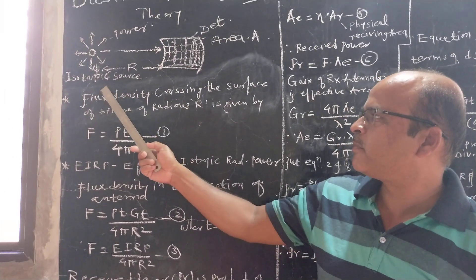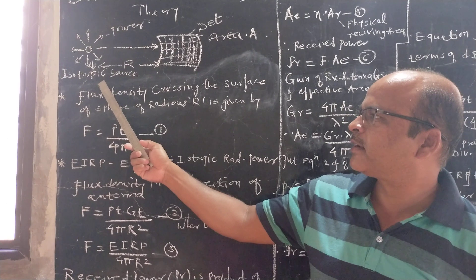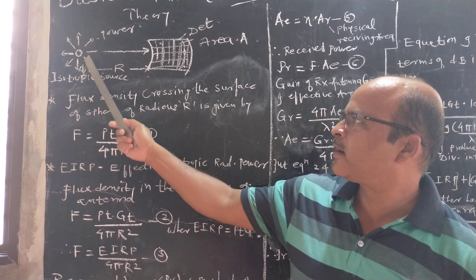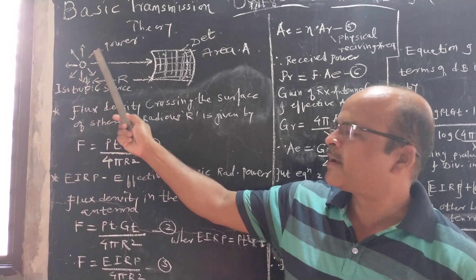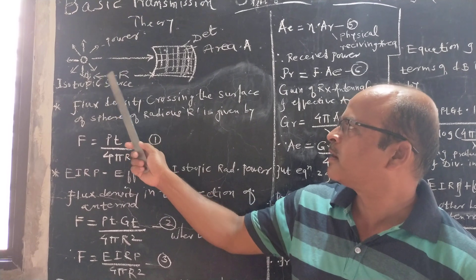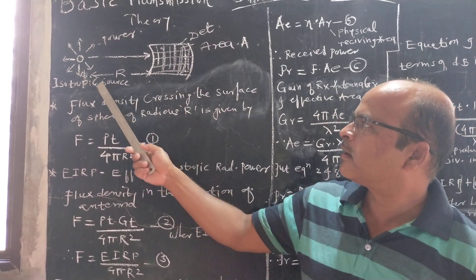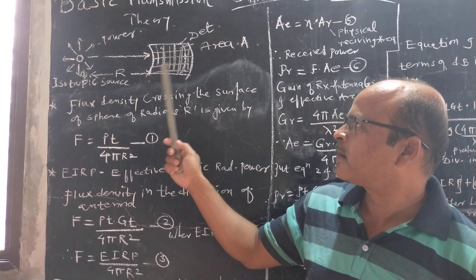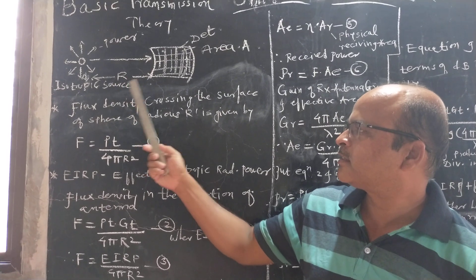First, we have to mention an isotropic source. We have to consider an antenna which is isotropic. Isotropic means an antenna which radiates equally in all directions — that is, it radiates equal power in all directions, as shown in this figure. And this is a detector having an area A, and this transmitted power is received by the detector. R is the distance between them.